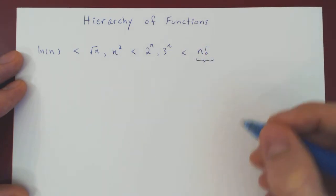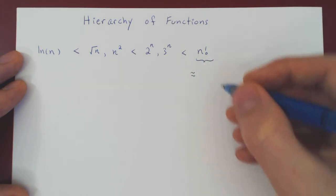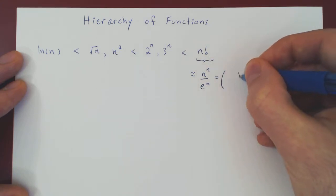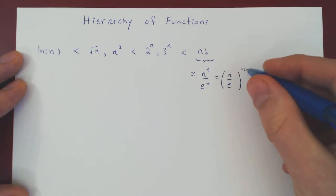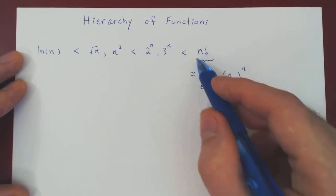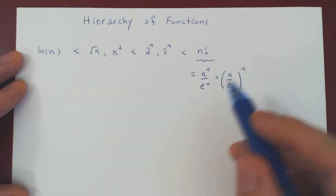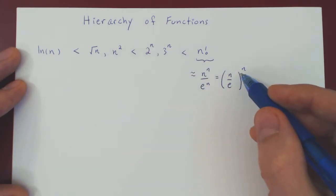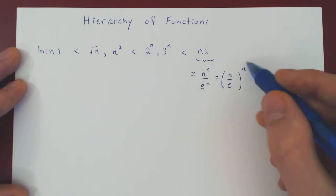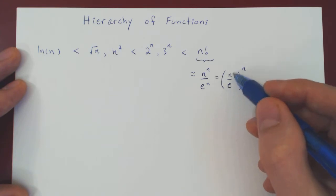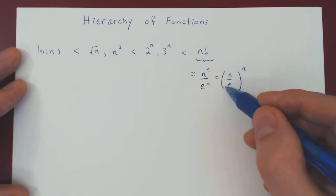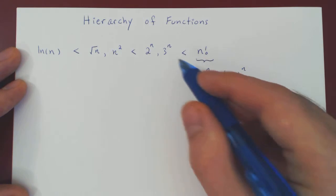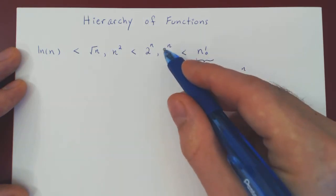If you recall, the factorial is roughly n to the n over e to the n. And if you combine this over a single power of n, you have (n/e) to the n. So if you compare a factorial — approximately (n/e) to the n — with an exponential function with a constant base, as n goes to infinity the base n/e becomes larger and larger. So your base actually blows up as well as the exponent, which is why this is much larger than a simple exponential with a constant base.